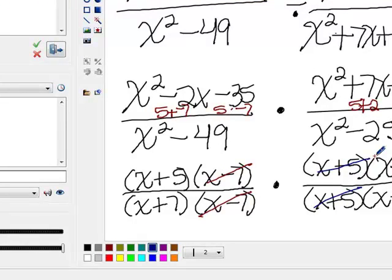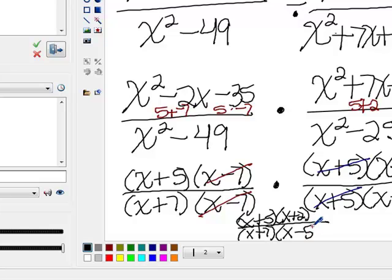And then look at what we have left, and you can get your solution. So we have the fraction x plus 5 times x plus 2, because that's all that's left in the numerator, over x plus 7 times x minus 5. And that would be your final solution.